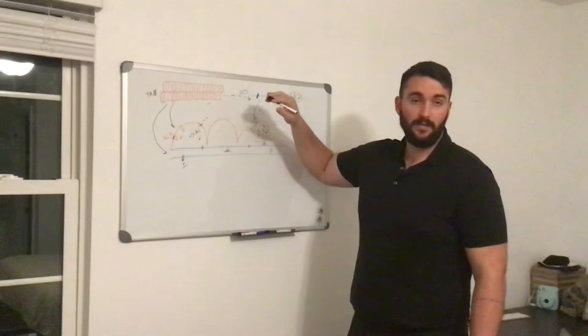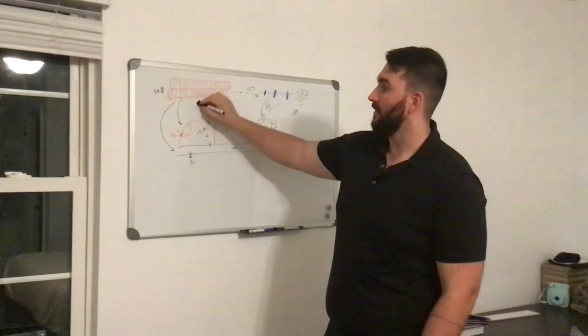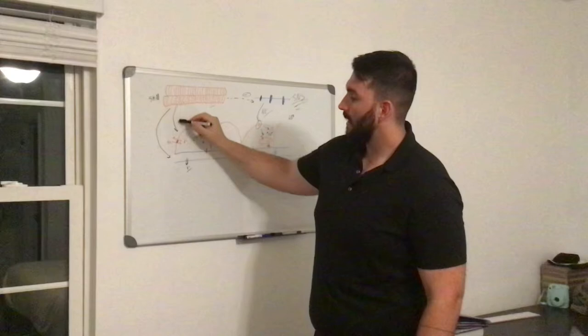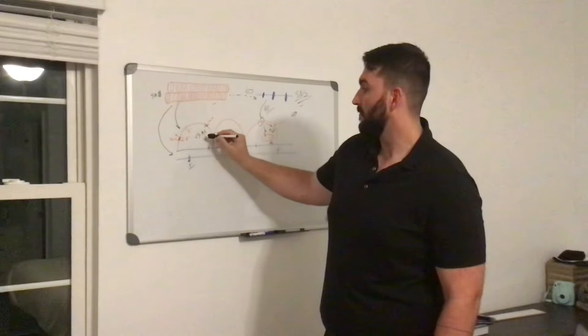So it all starts with activation of the skeletal muscle fibers. The skeletal muscle fibers contract and release metabolites. And these metabolites are going to come down and activate the endothelial cells and the smooth muscle cells.